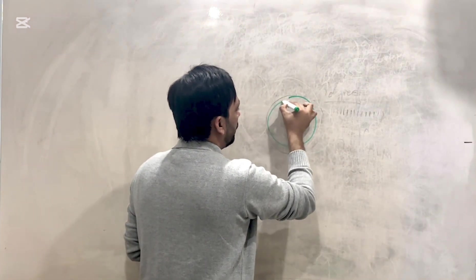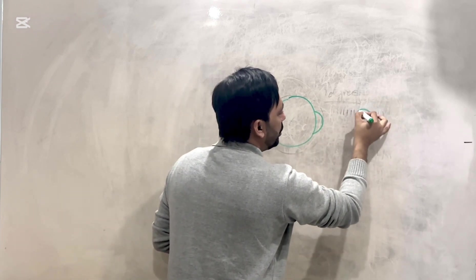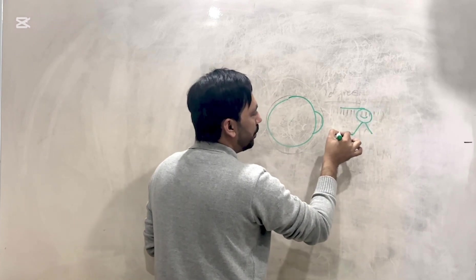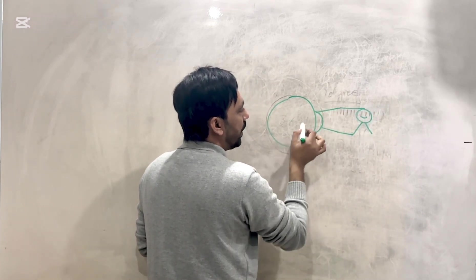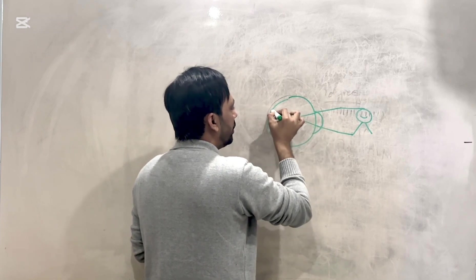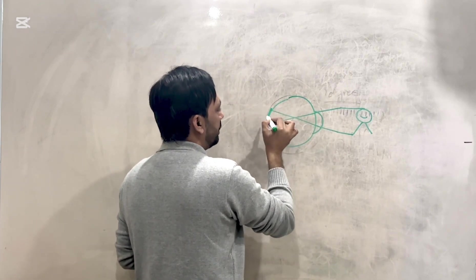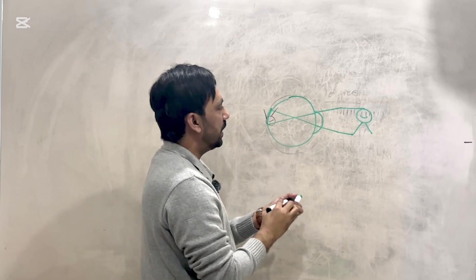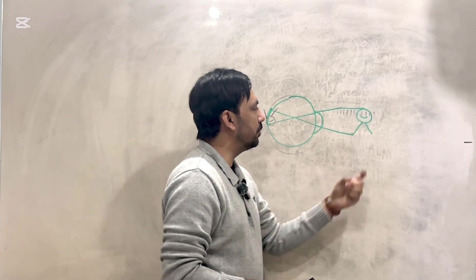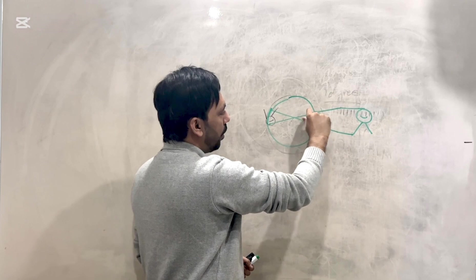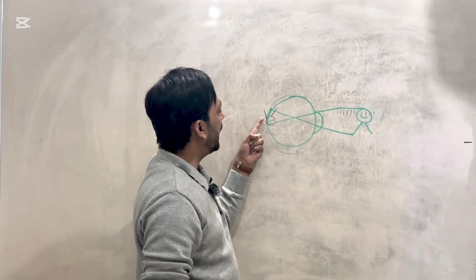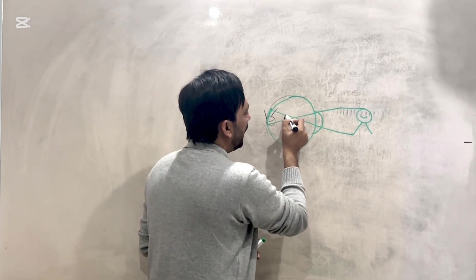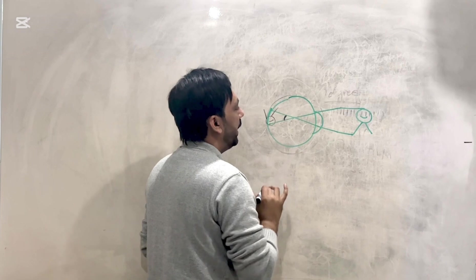This is an eyeball — here is the cornea — and this is an object I'm looking at. The light rays from the top and bottom of the object enter into the eyeball and make a clear, upside-down image on the retina. The light rays cross over and form this inverted image.